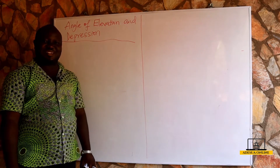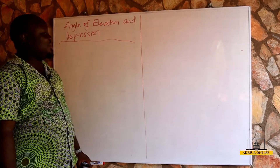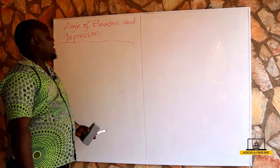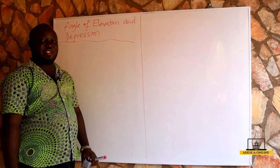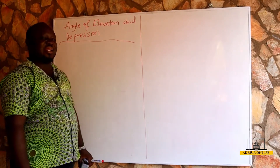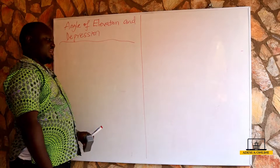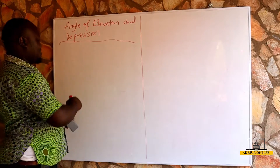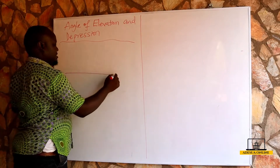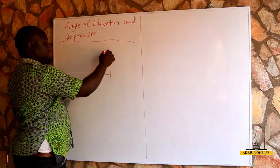Hello students, today we are going to continue by studying angle of elevation and depression under trigonometry. Assuming we are on level ground and there is a building here.